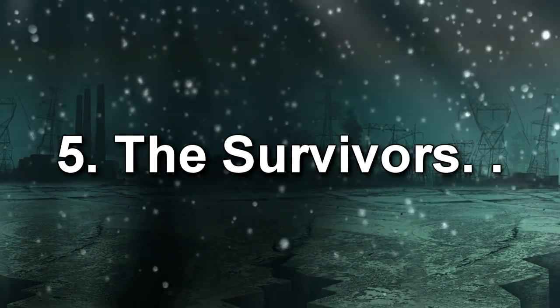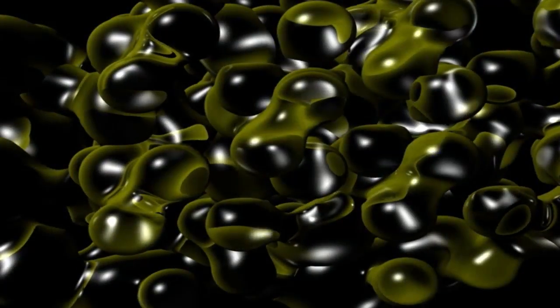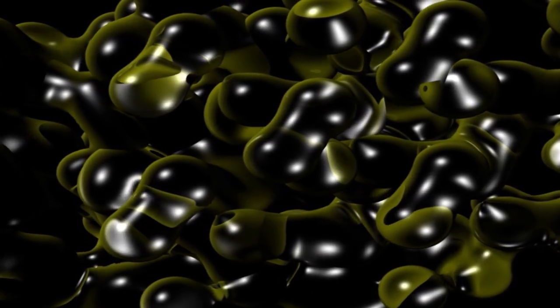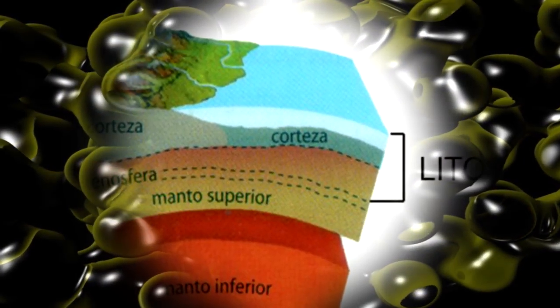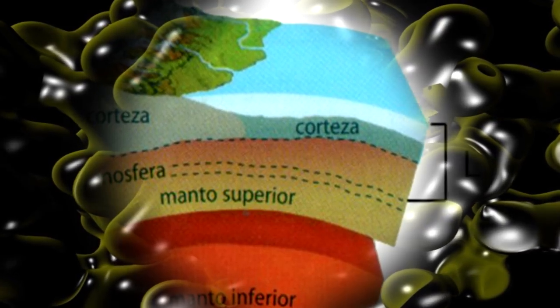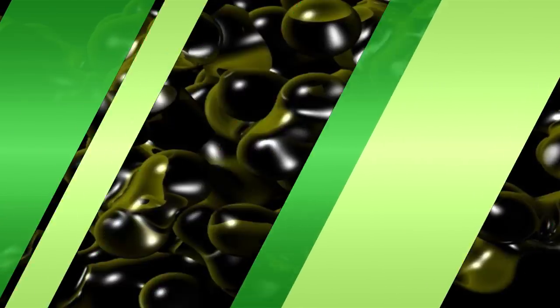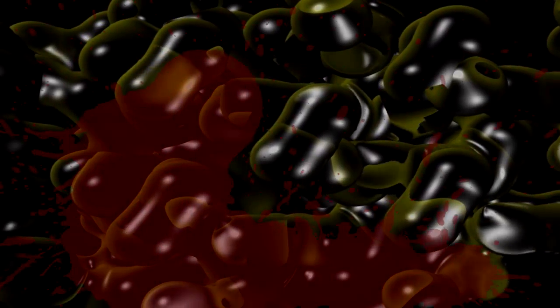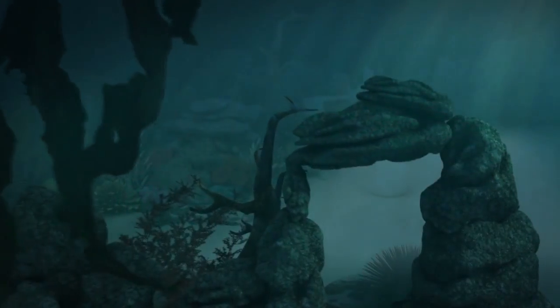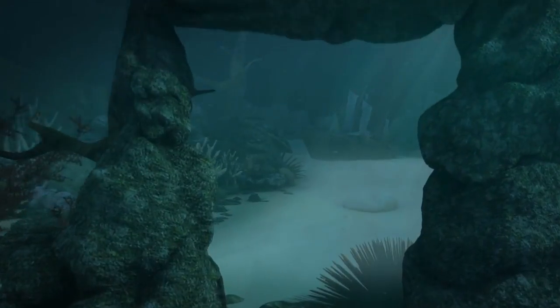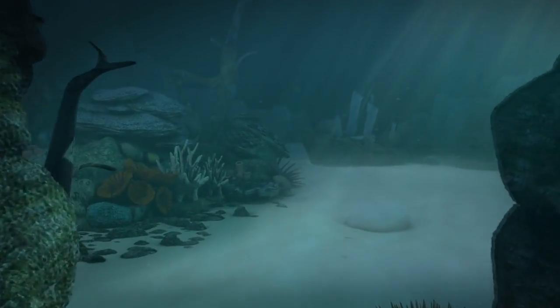Fifth stage: the survivors. It is likely that only microorganisms living in the earth's crust could survive without the sun. This is due to core heat, which probably keeps them alive. However, even most bacteria would be eliminated. The lucky ones would be fish from the depths of the ocean, since they could continue to live because they do not need light nor heat to develop.